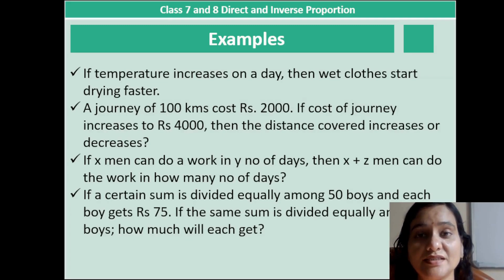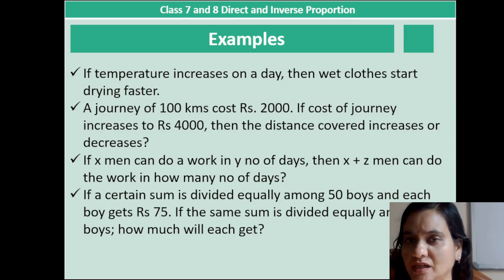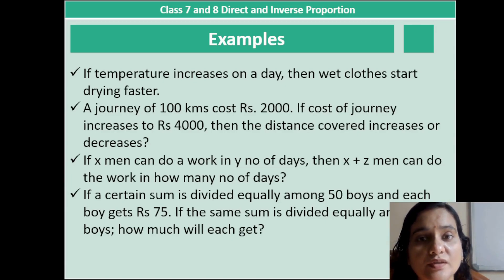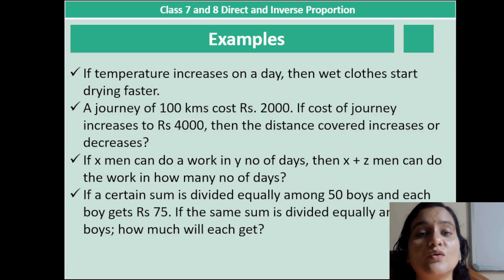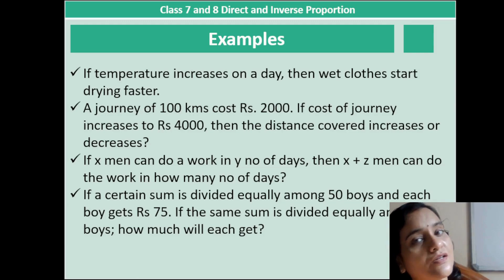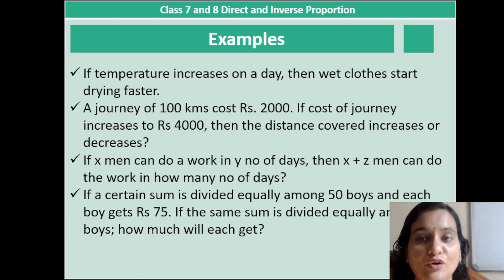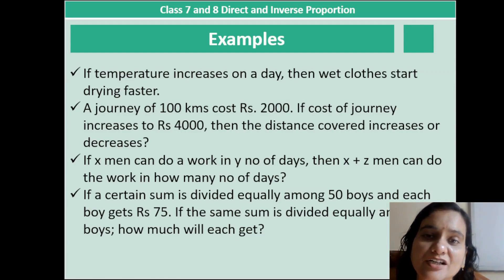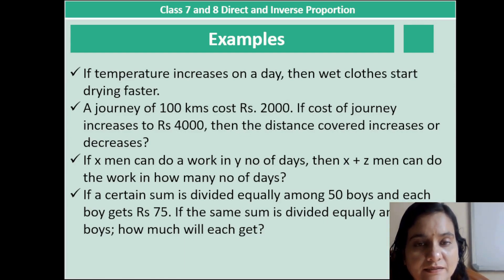Let's look at some real life examples to understand direct and inverse proportion. The first example is temperature. When temperature increases on a certain day, wet clothes dry up quite fast. So when temperature increases, the drying speed also increases. Both increase at the same time. If there is a dip in temperature, the drying speed also decreases. So there is a direct relationship between these two quantities.